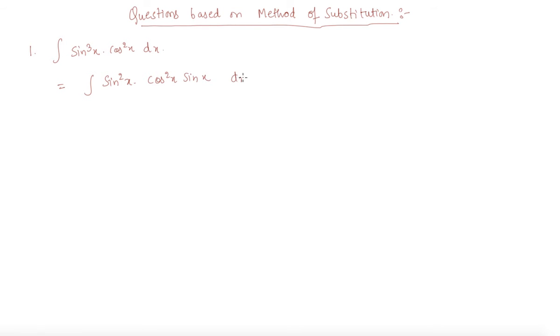I didn't do anything, just split the cube term in square and singular term. Can I write sin square x as 1 minus cos square x into cos square x sin x dx.